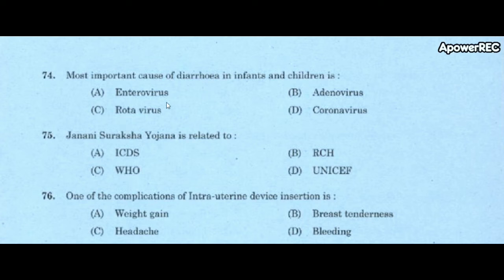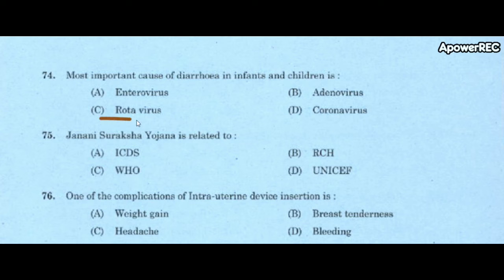Next question: most important cause of diarrhea in infants and children is A) enterovirus, B) adenovirus, C) rotavirus, D) coronavirus. Correct answer is rotavirus. The most important cause of diarrhea in infants and children is rotavirus.